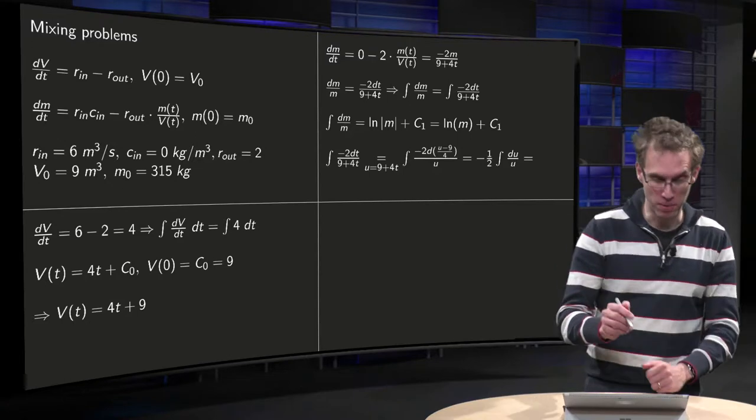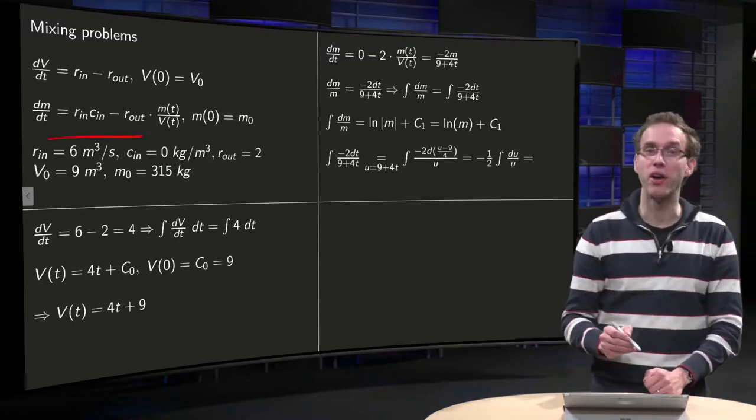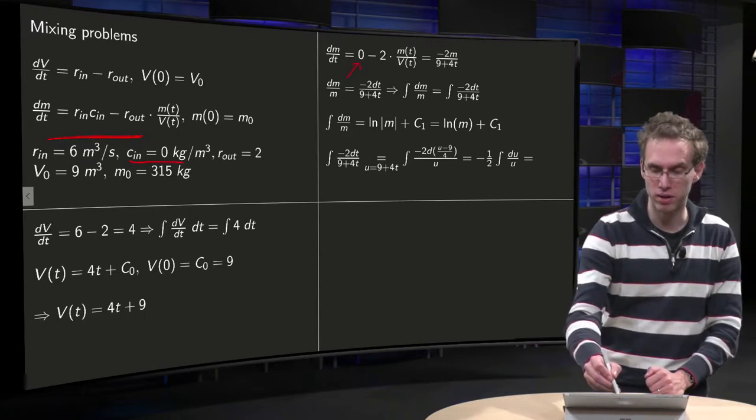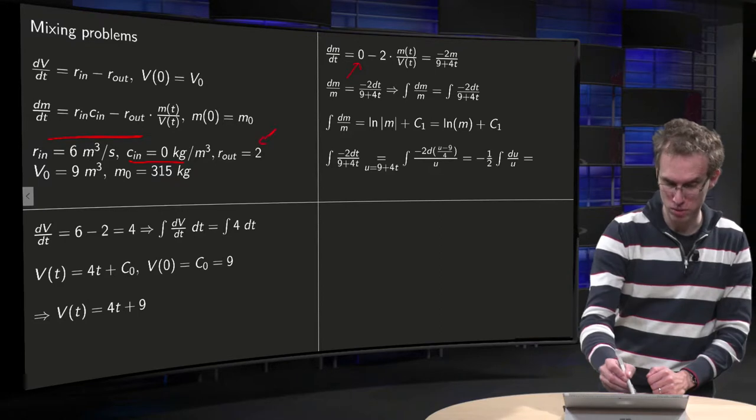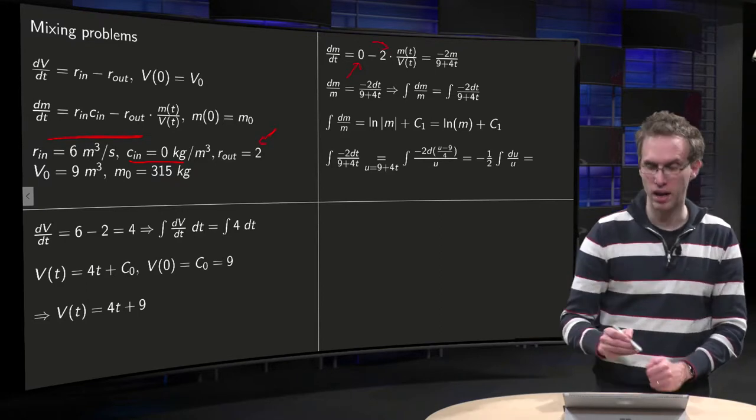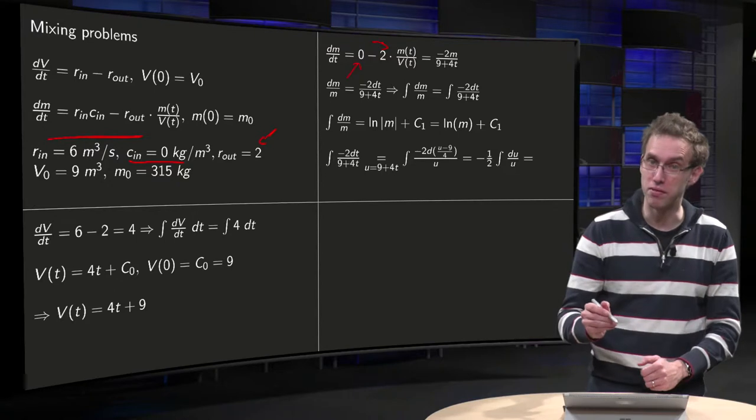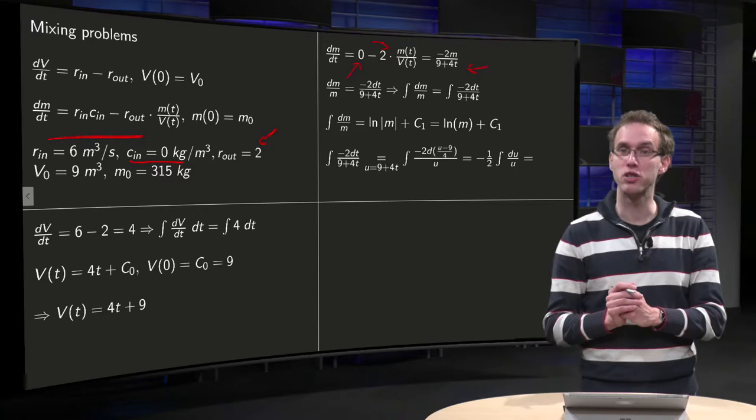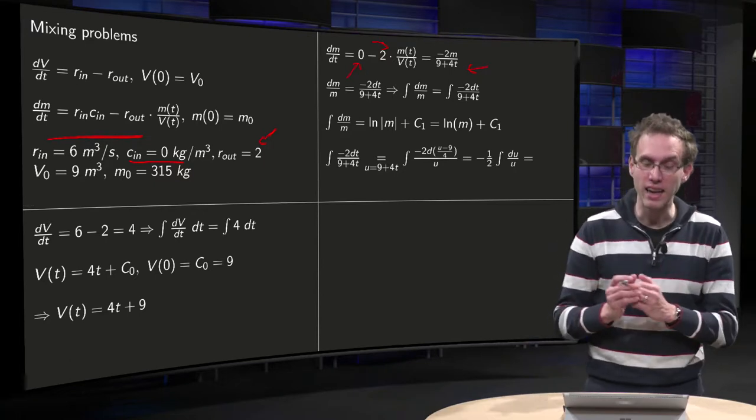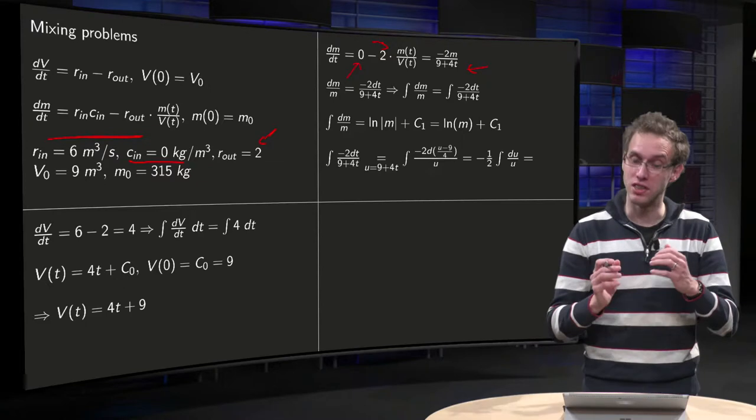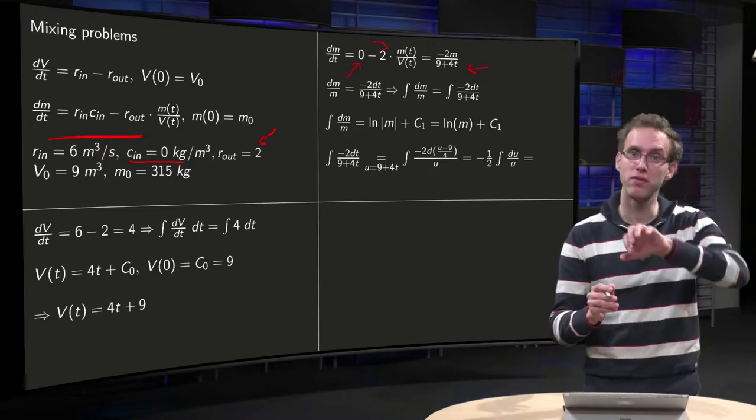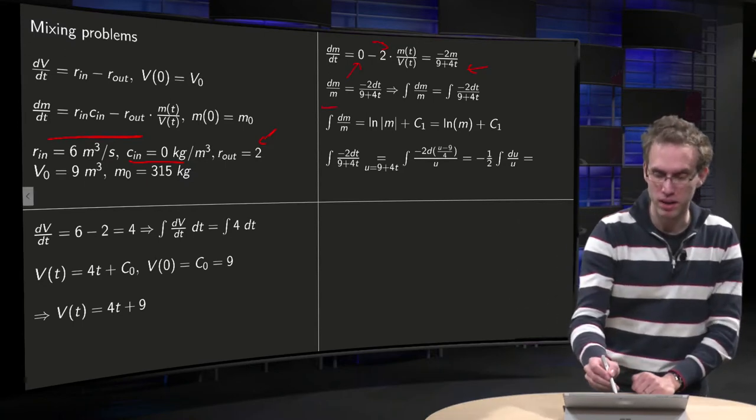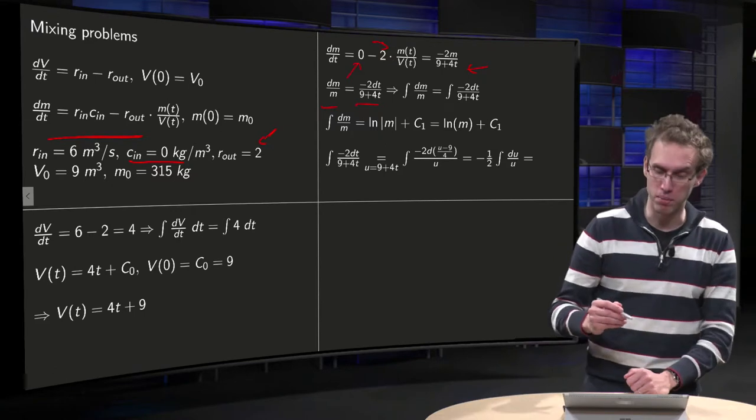Now we go to the mass balance over here. Well, the r_in times c is nice, because c equals 0, so this term over here drops out. The r_out equals 2, so we get minus 2 times m over V, and we just computed V. That's why you need V first, the V is over here. So dm/dt equals minus 2m divided by 9 plus 4t. And that's really nice, because this is a separable differential equation. So we separate, we put all m's to the left and all t's to the right. dm over m equals minus 2 dt over 9 plus 4t.